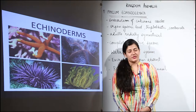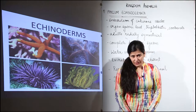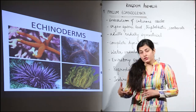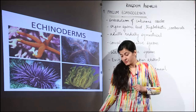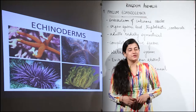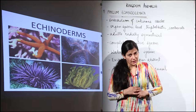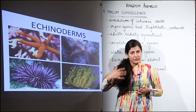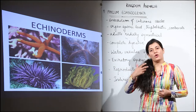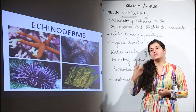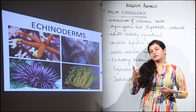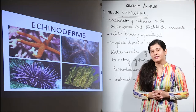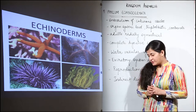The next phylum we deal with is Phylum Echinodermata. One by one we have seen each phylum in Kingdom Animalia, and we get to know that whatever classification is being made, phylogenetic relationships are kept in mind. The phylums we come across show some level of development and evolution — each successive phylum is often superior to the previous one, and so is the case with Echinodermata.